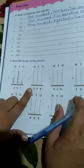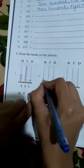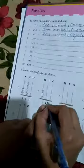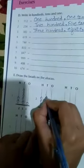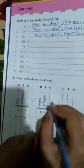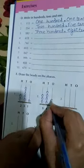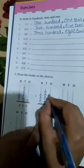344. Hundreds, how many are? Three - one, two, three. Tens, how many are? Four - one, two, three, four. And ones, how many are? Four - one, two, three, and four.